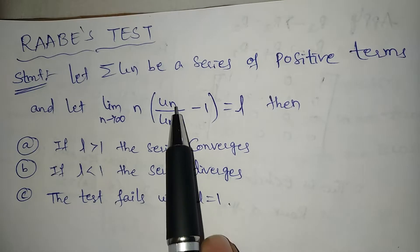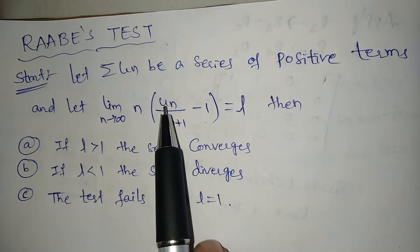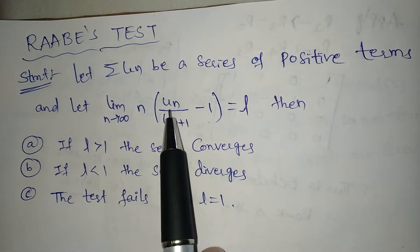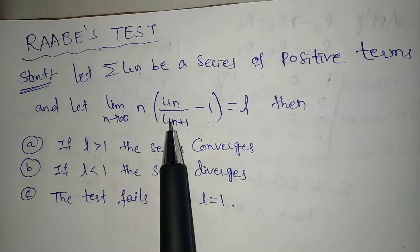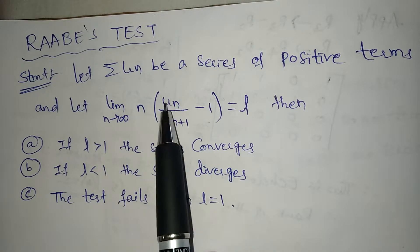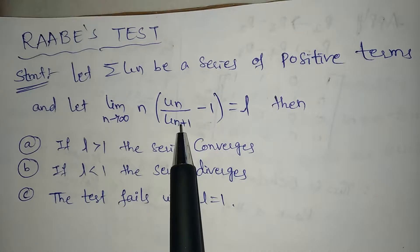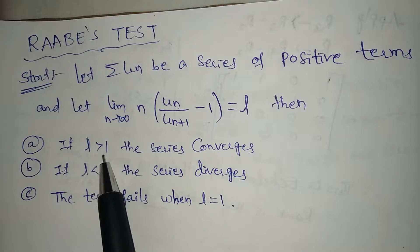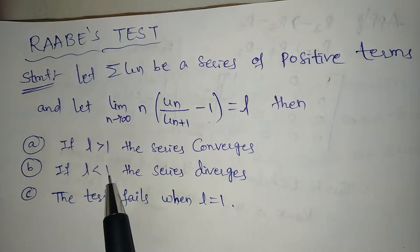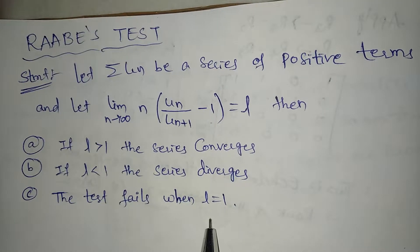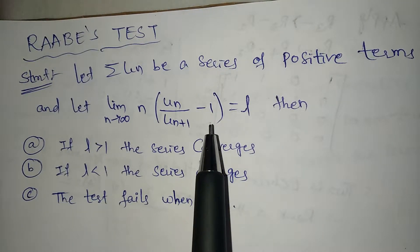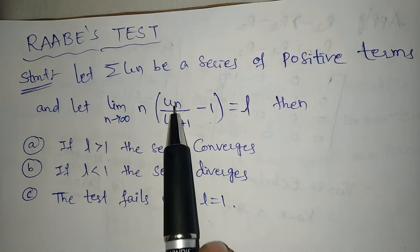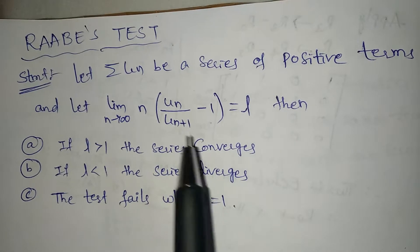Now, comparing with D'Alembert's ratio test — in that test we use Un/Un+1. The conditions are: L greater than 1 is convergence, L less than 1 is divergence, and L equal to 1 is test failed. In the problem, we apply Un/Un+1 to the series.